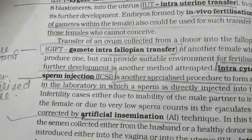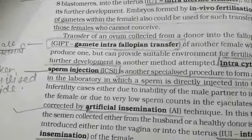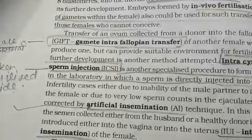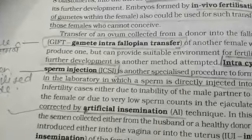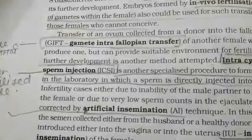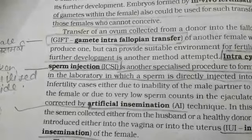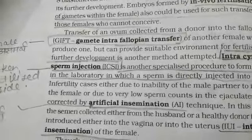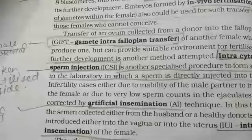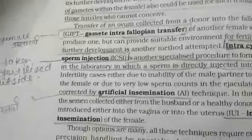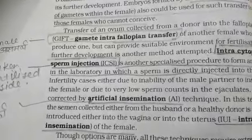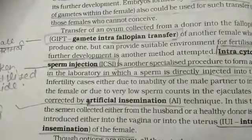Artificial Insemination — AI. When a male has a very low sperm count, semen is collected by artificial insemination technique. In this technique, the semen collected either from the husband or a healthy donor is artificially introduced either into the vagina or the uterus of the female. If a male's sperm count is very low, another donor's sperm is added into the uterus so that the female's egg is fertilized.